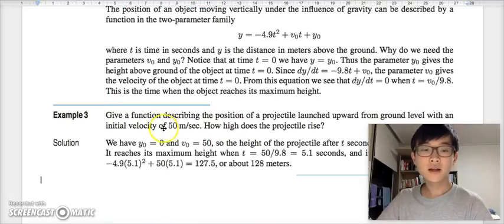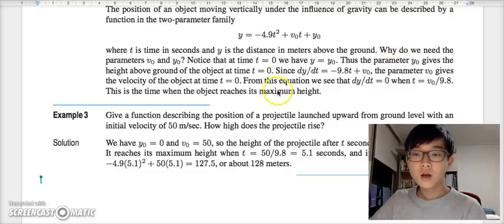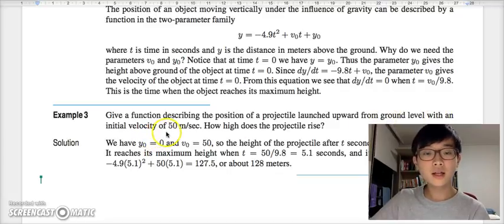Let's look at example number 3. Given a function describing the position of a projectile launched upward from ground level with an initial velocity of 50 meters per second, how high does the projectile rise? All we have to do is compute some values. The y_0 value provided is ground level or 0, and v_0 is 50 meters per second. The height of the projectile after t seconds is y = -4.9t^2 + 50t. It reaches its maximum height when t equals v_0/9.8, which is about 5.1 seconds, and its height at that time is about 128 meters.